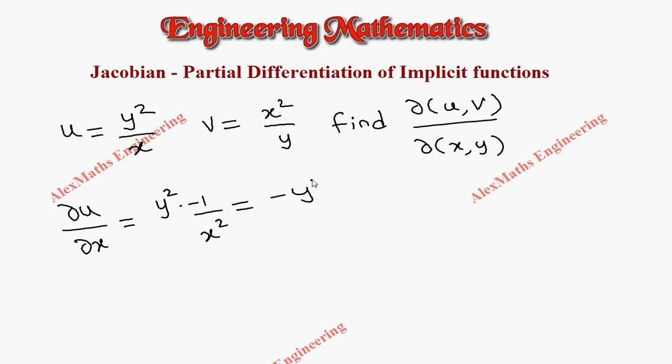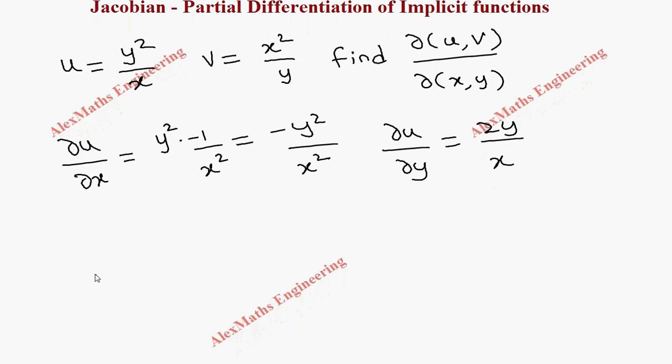Now let's find ∂u/∂y. Here, the y² differentiation is 2y and x is constant, so x is written as it is. This gives us 2y/x.